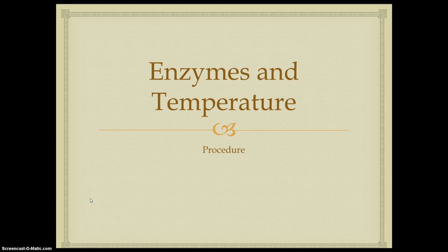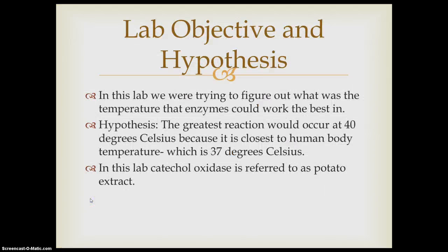Enzymes and temperature procedure. Lab objective and hypothesis. In this lab, we were trying to figure out what was the best temperature that enzymes could work the best in. Hypothesis: The greatest reaction would occur at 40 degrees Celsius because it was closest to human body temperature, which is 37 degrees Celsius. In this lab, catechol oxidase is referred to as potato extract.